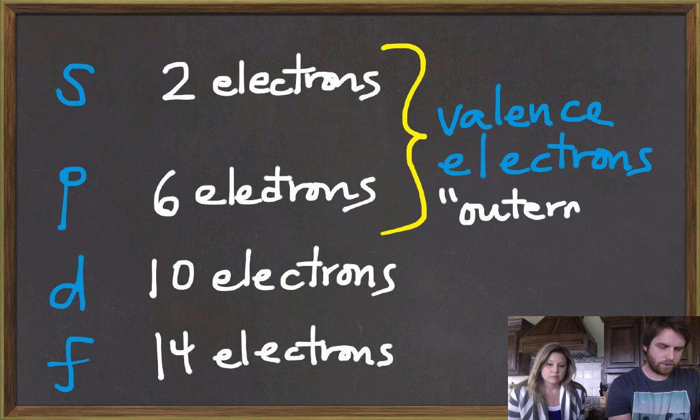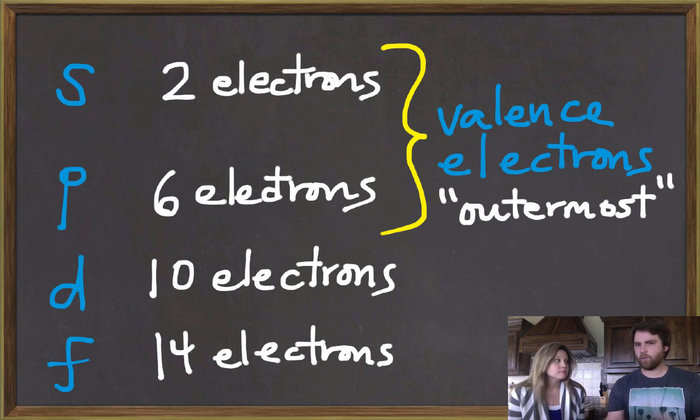So these are the outermost electrons. So valence electrons we'll talk about a little bit more when we talk about things actually bonding to each other.